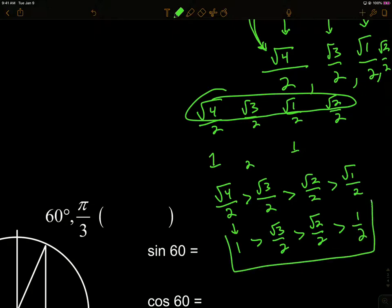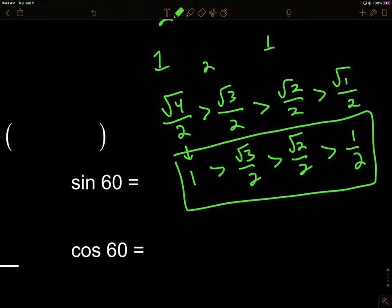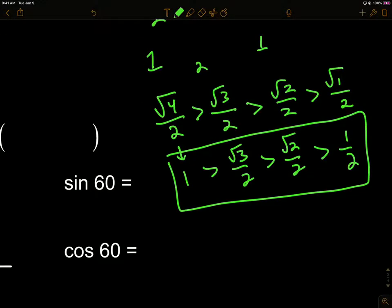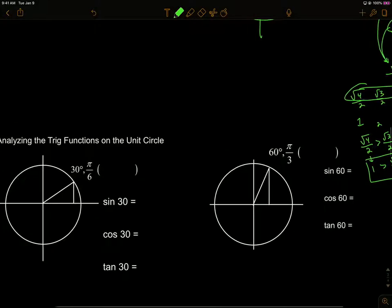You need to remember these numbers and know their order — which one is larger than the other. These numbers come up again and again. I should also add that 0 is going to come up as well, and 0 is obviously the smallest. So from largest to smallest: 1, √3/2, √2/2, 1/2, 0. You could reverse the list to go smallest to largest.